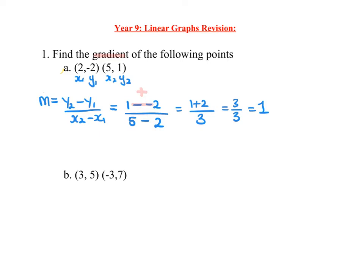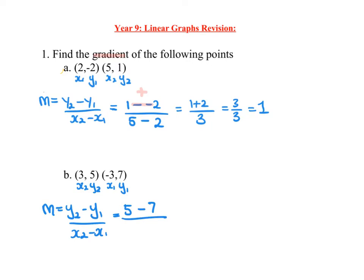Here's another example. It doesn't matter which point you call point 1 or point 2 — it will still produce the same result. Always write your formula out to tell the examiner what you're using, so in case you make a calculation error, you're showing you know it. So y2 is 5 minus 7 (y1), and x2 is 3. We get a minus and a minus, so 5 minus 7 is negative 2, and 3 plus 3 is 6. Simplified: negative 2 over 6 equals negative 1 over 3.